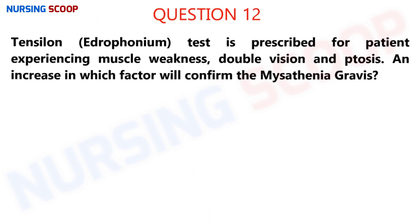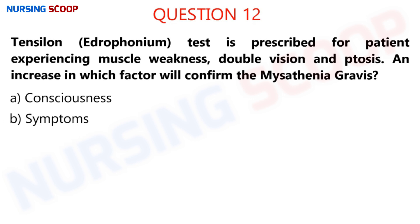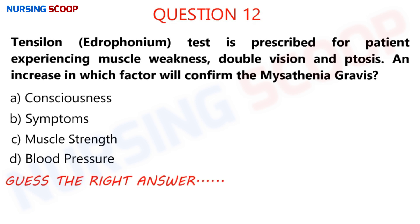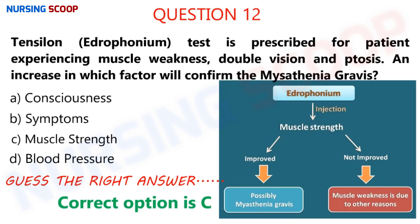Moving to question number 12: A Tensilon test is prescribed for a patient experiencing muscle weakness, double vision, and ptosis. The increase in which factor will confirm myasthenia gravis? Option A is consciousness, option B is symptoms, option C is muscle strength, and option D is blood pressure. In the case of myasthenia gravis, which factor will increase after the Tensilon test?